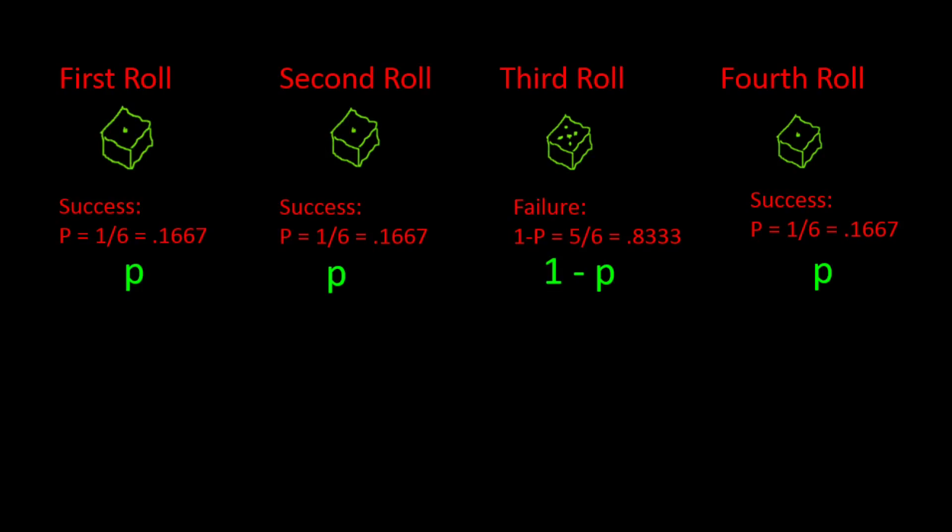So let's say we're rolling a die. Does that fulfill the four essential properties just listed? Well, let's see. First, the sample must consist of a fixed number of observations called n. So let's say we roll the die four times — then n is equal to 4.